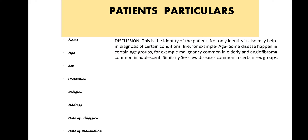Religion may be an important indicator as well. In certain religious groups where consanguineous marriage is practiced, patients may have some genetic form of disease. Address or residence may also be important — for example, goitrous women are more commonly found in the sub-Himalayan region.